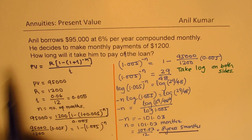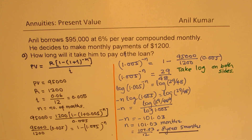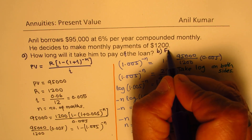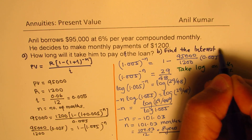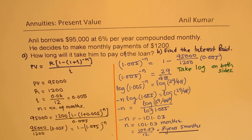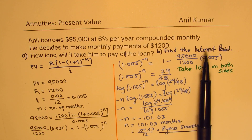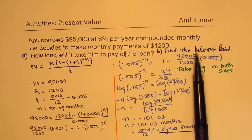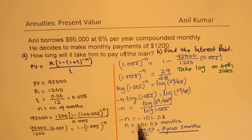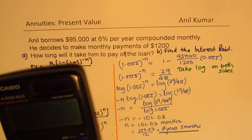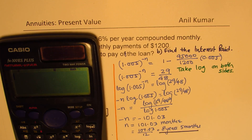Now we can add one more part to this. Let's say Part A was how long it takes to pay off the loan. Part B could be: find the interest paid. So I'd like you to focus on this — how do we find the total amount paid as interest? The actual borrowing was only $95,000, but the person paid $1,200 for how many months? 101 months.